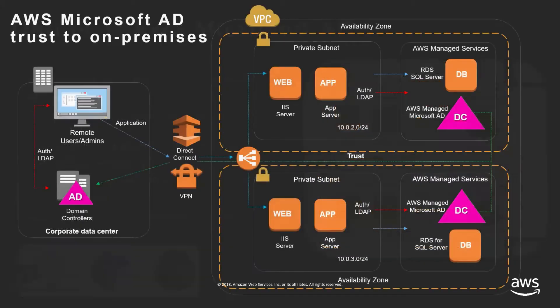If you have an on-premises AD already, you can create a trust relationship at the forest level. You can also perform any maintenance or authentication between the two domains, between the two forests, and you'll be able to control all connections. It works both with Direct Connect and with the site-to-site VPN.